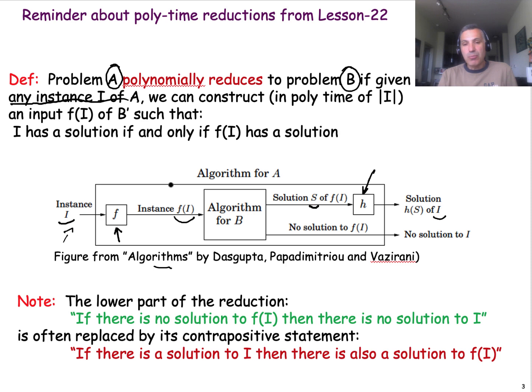So in order for this reduction to be correct, you need to prove that this instance of problem A that we started with has a solution if and only if this instance of problem B has a solution. This part here, if and only if, means that we have to cover both the case that there is a solution and the case that there is no solution. That's why we have to prove this equivalence.